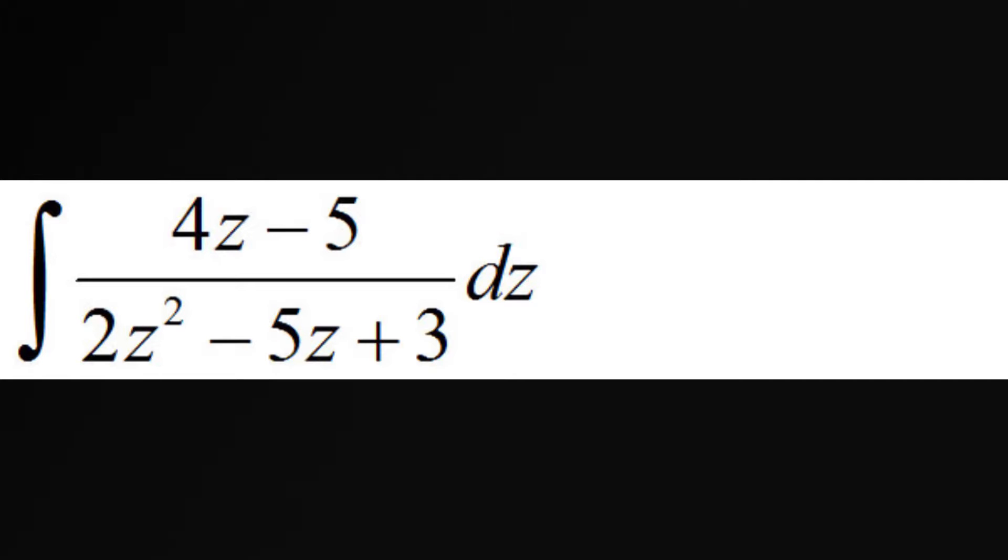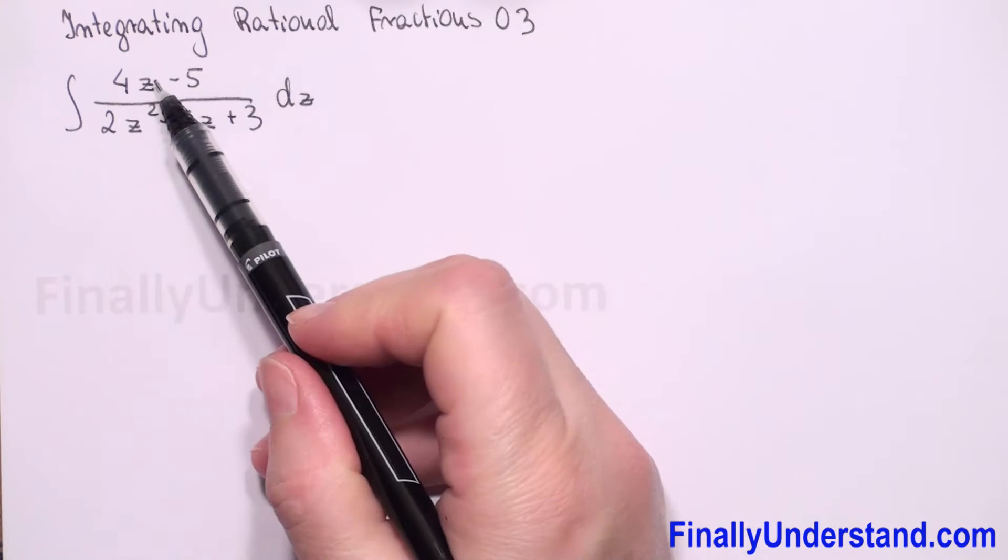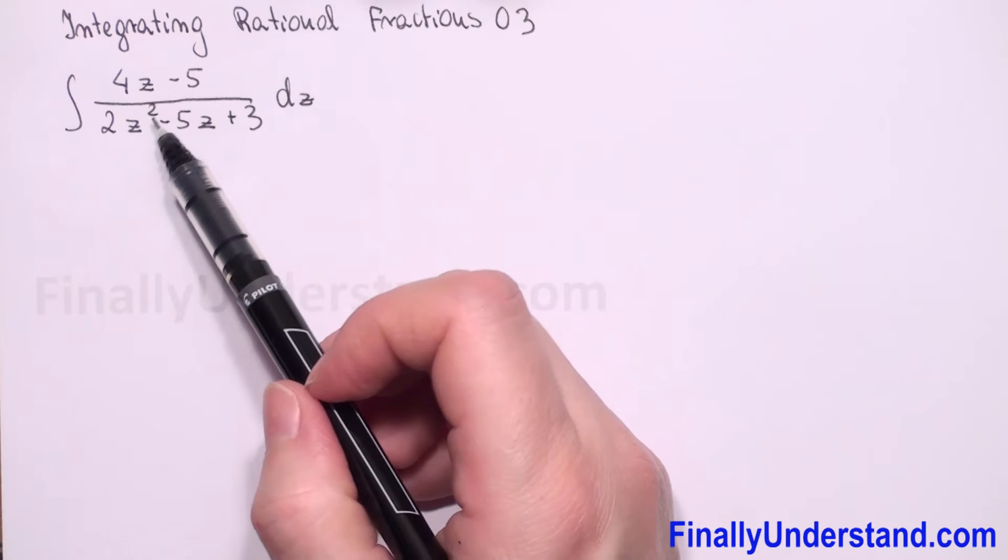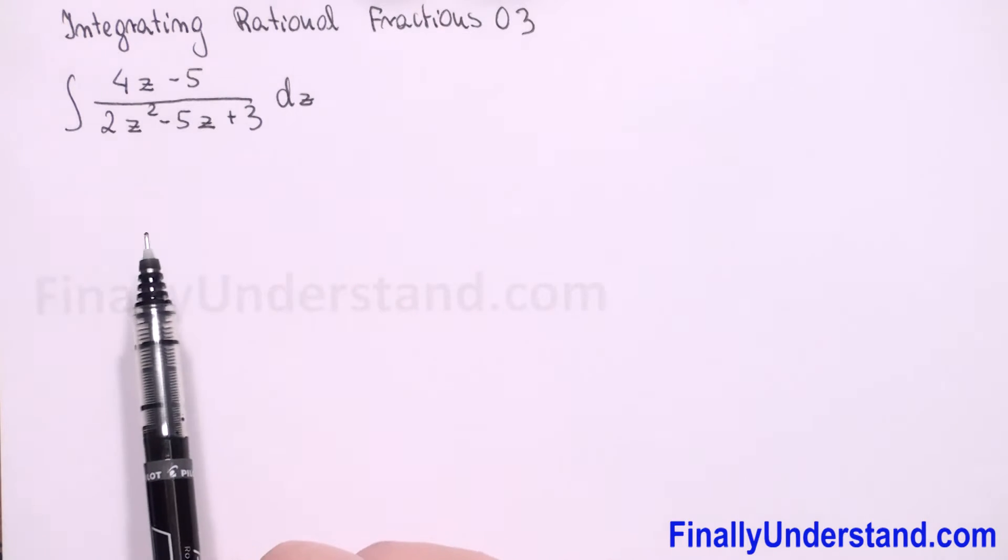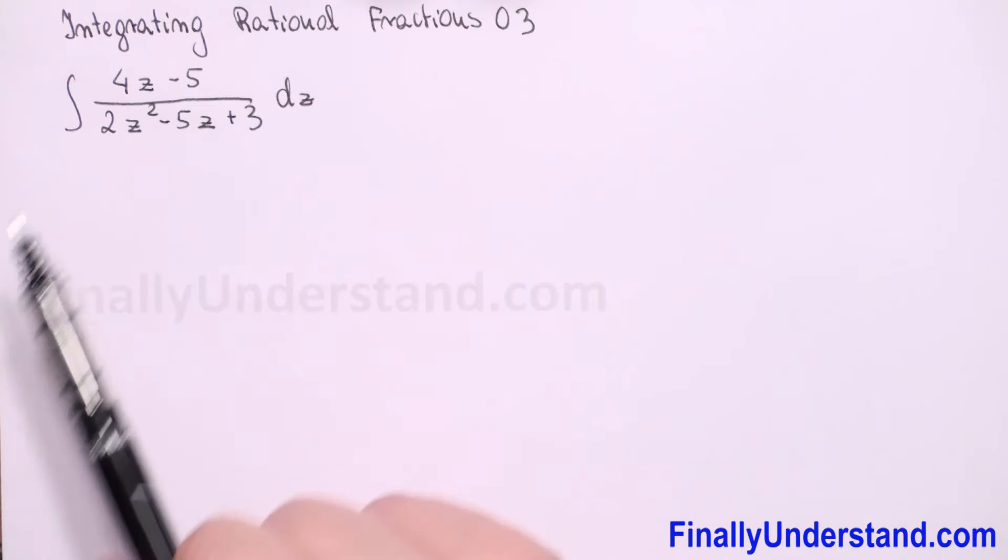We have integral of rational fraction. So first we will check degree of numerator and denominator. We have in numerator z to first power and in denominator z to square. So degree of denominator is greater than degree of numerator.